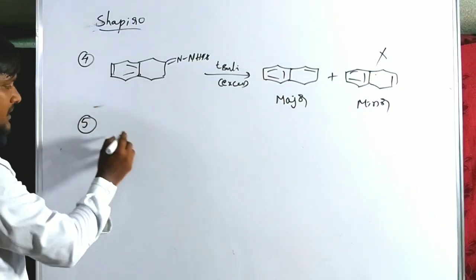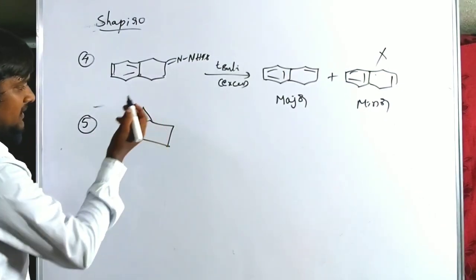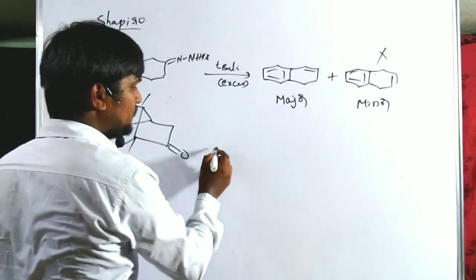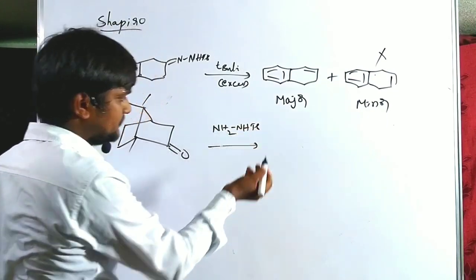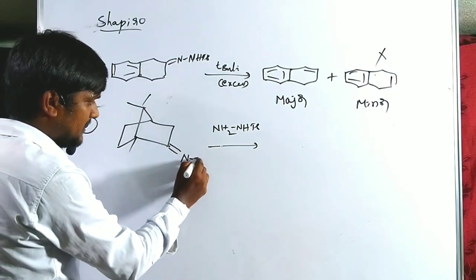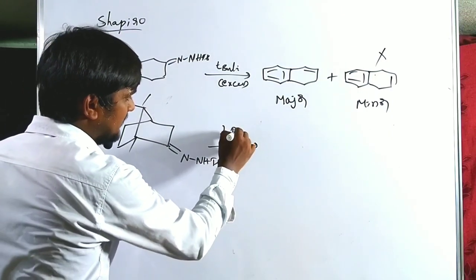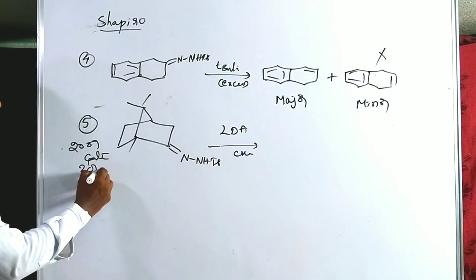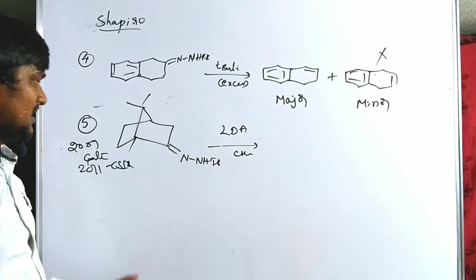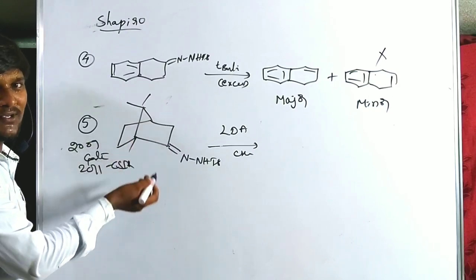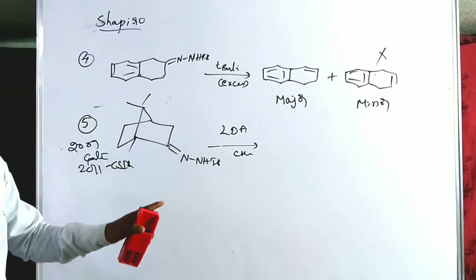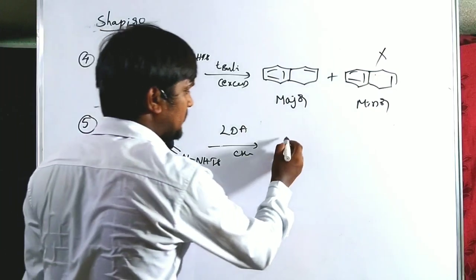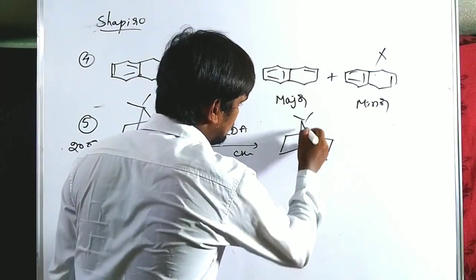The fifth example is from GATE 2019 and CSIR 2011. Here the tosyl hydrazone has no alpha proton available on one side, so double bond formation cannot occur at that position. Therefore, only one product is formed. When LDA is followed by DMF as electrophile, the vinyl carbanion attacks DMF to give an aldehyde-functionalized product at the double bond position.